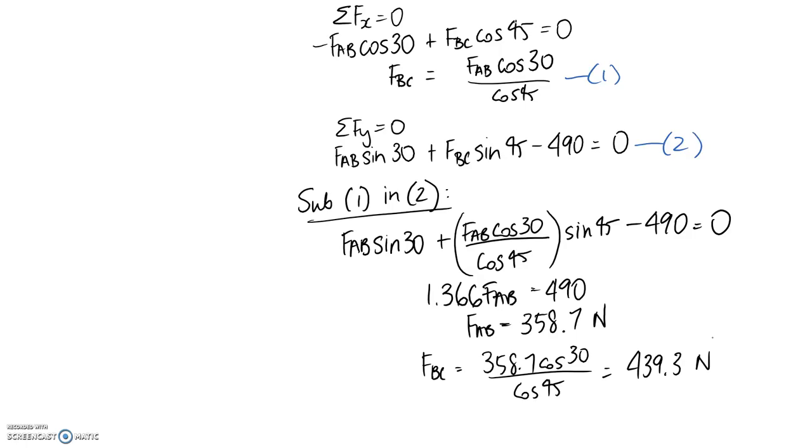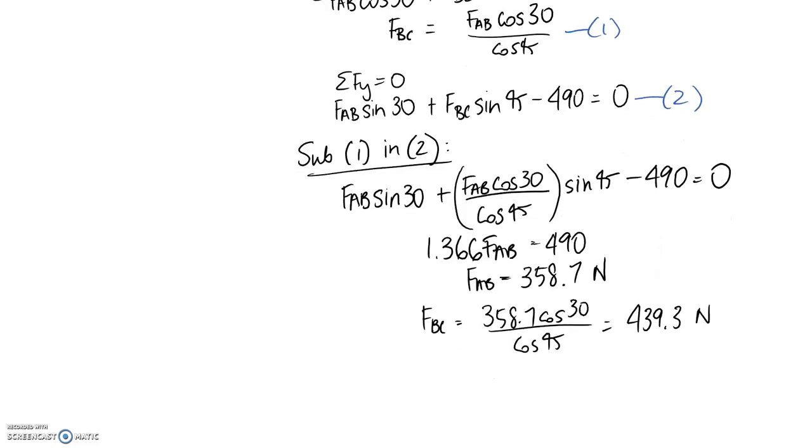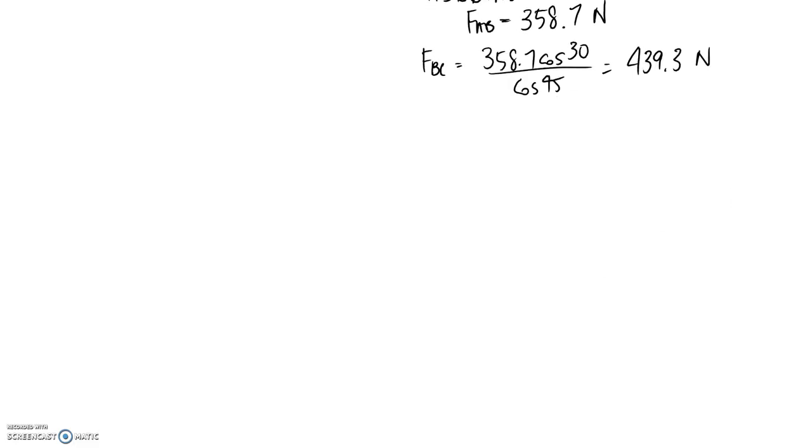Alright so now that we know both of those forces we need to convert them into the actual stress within these members. So I'll scroll down again and let's start by looking at member AB. So the stress we see in this member is going to be equal to the force within it divided by its cross-sectional area. So this is going to be equal to the 358.7 Newtons divided by the area.